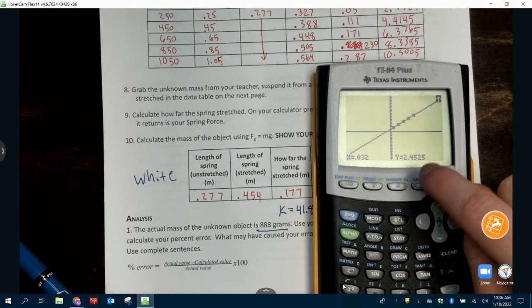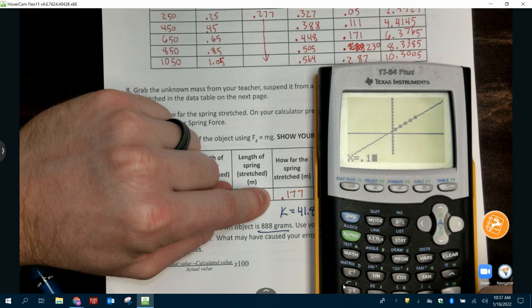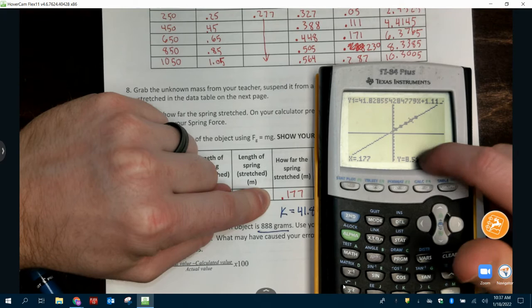So what we're going to do here, once you've got this graph up, you're going to press second, trace. You're going to press enter on value, and then you're going to plug in how far it stretched. So for mine, that's 0.177, and I'm pressing enter here.